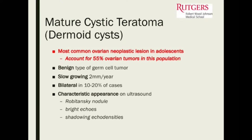The mature cystic teratoma — dermoid — is the most common ovarian neoplastic lesion in the adolescent, accounting for about 55% of ovarian tumors in this population. It's a benign type of germ cell tumor. It's slow growing — about two millimeters per year. They can be bilateral in 10 to 20% of cases, and they have a typical characteristic appearance on ultrasound.